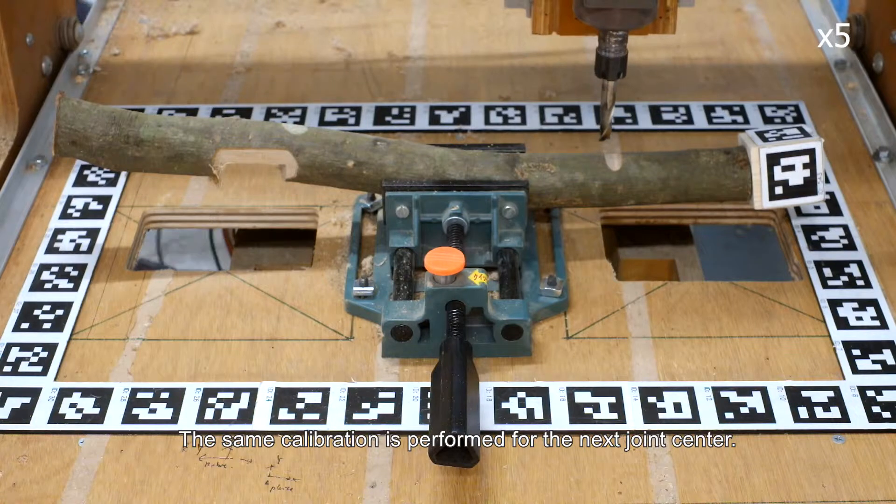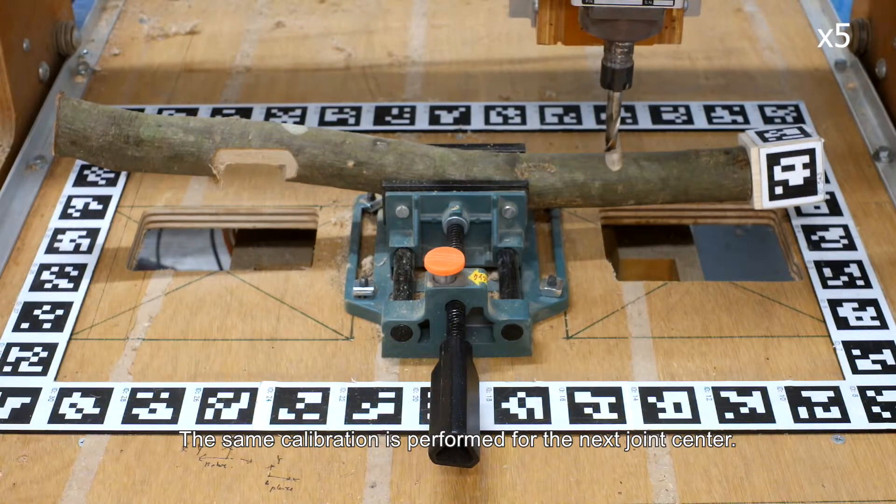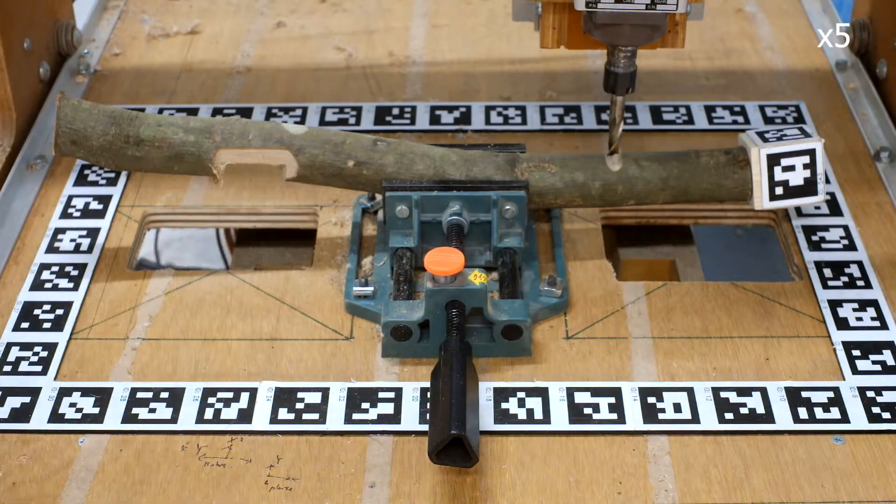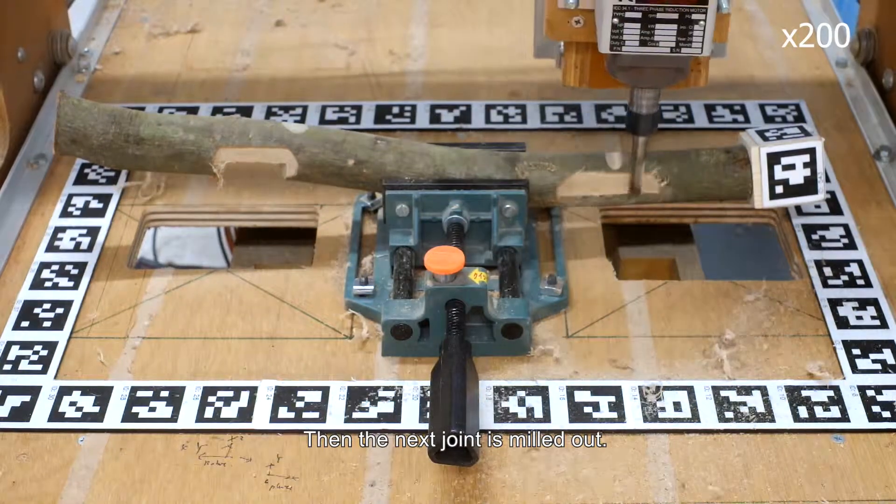The same calibration is performed for the next joint center. Then, the next joint is milled out.